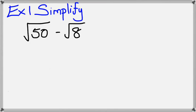In this example, I want to simplify square root of 50 minus square root of 8. Now, I know that 50 could be written as 25 times 2, and 8 could be written as 4 times 2.